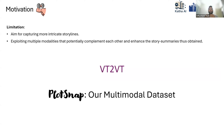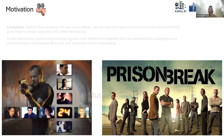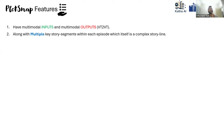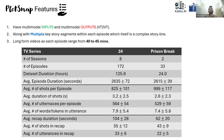We introduce PlotSnap, our dataset for this domain. PlotSnap consists of two popular American crime thriller TV shows — 24 and Prison Break. Feature-wise, it is fully multimodal: inputs and outputs are both multimodal, with ground-truth labels for both video and text. Each episode consists of multiple key story segments, unlike prior 5-10 minute video datasets. These videos are 40-45 minutes long, with the entire dataset totaling 149 hours.